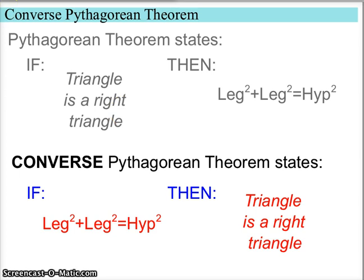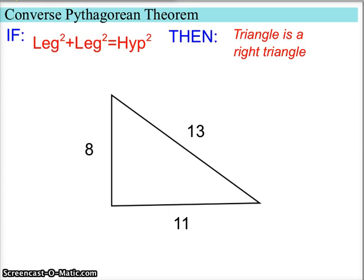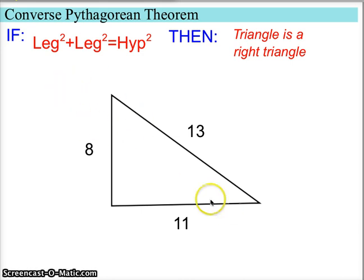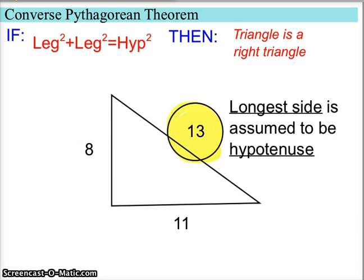Let's see that in action. Here we have a triangle — we don't know if it's a right triangle. This looks like it could be 90 degrees, but maybe it's 91 or maybe it's 89 degrees. So we're going to set it up where we assume the two shorter sides are the legs and the longest side is the hypotenuse. We don't know for sure, maybe it's not a hypotenuse, but we just assume that it is.